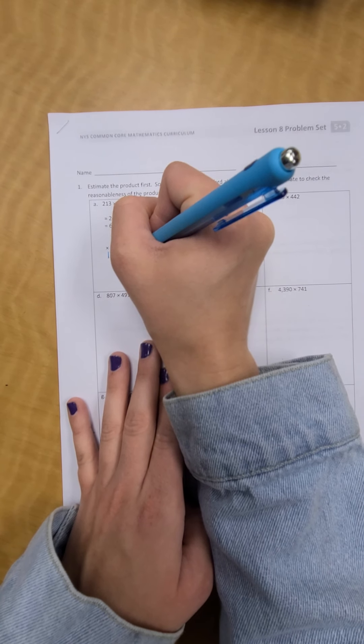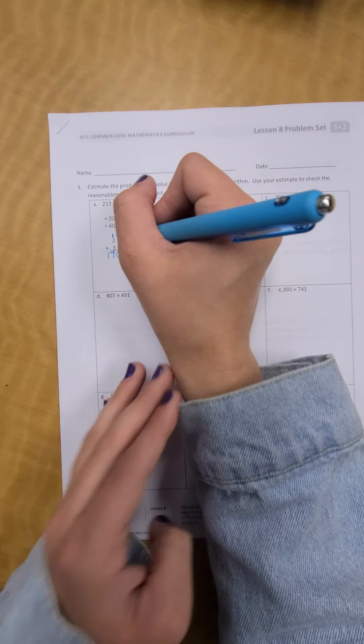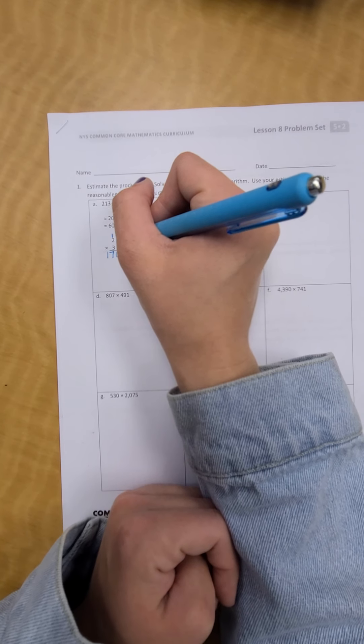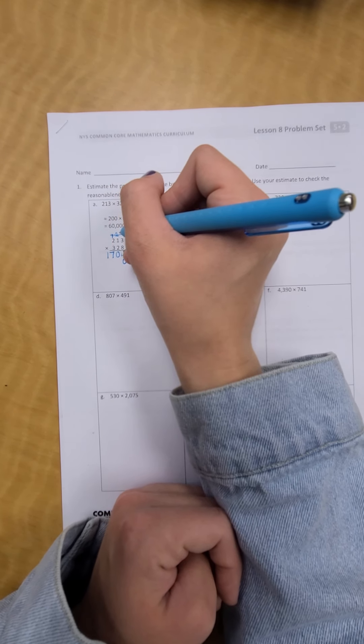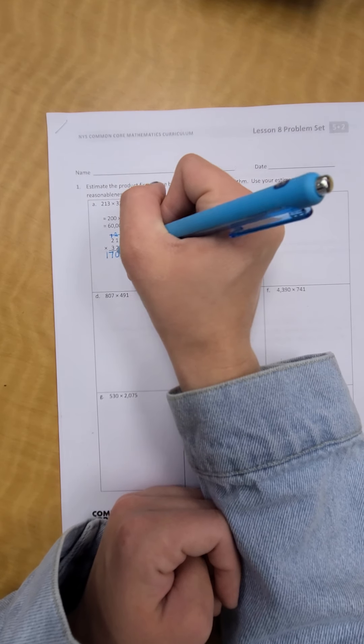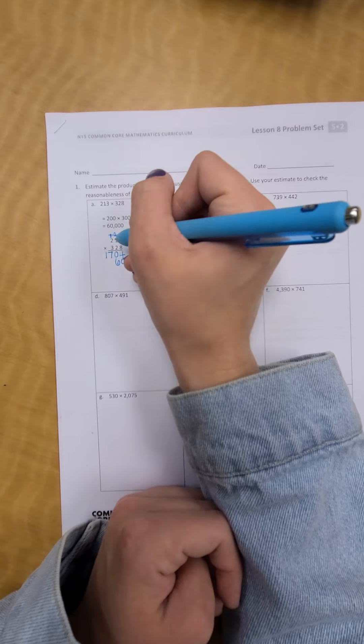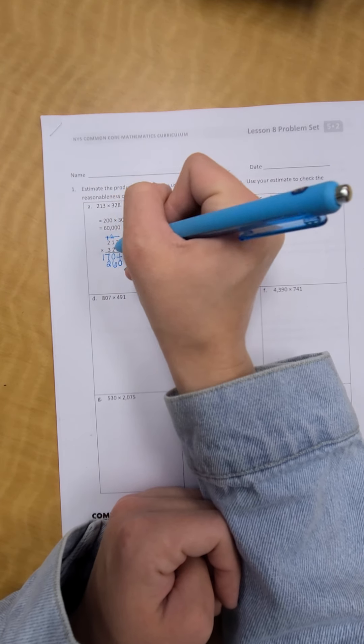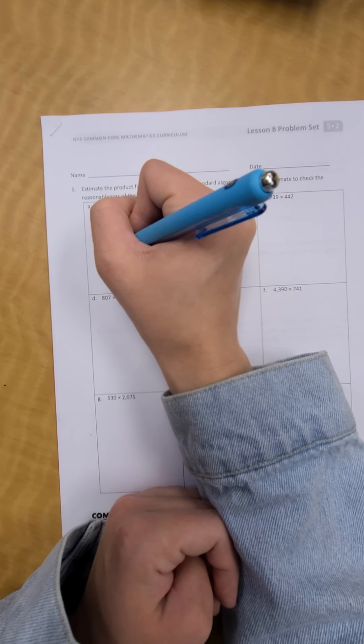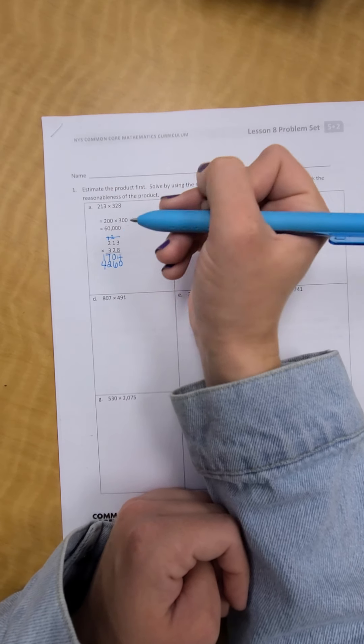Then, we put our 0 on our 1s place because we're done with the 1s place. Then, we go to our 10s. 2 times 3. I'm going to cross that out. That way, I remember. I don't need those anymore. 2 times 3 is 6. Put down your 6. 2 times 1 is 2. Put down your 2. 2 times 2 is 4. Put down your 4.